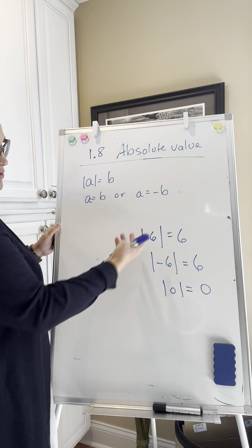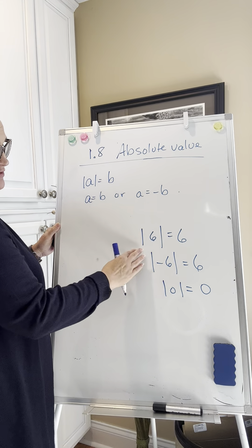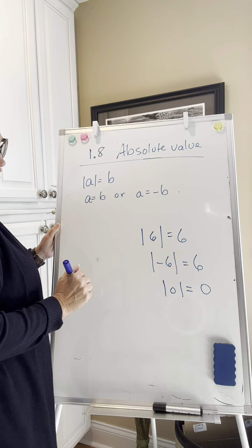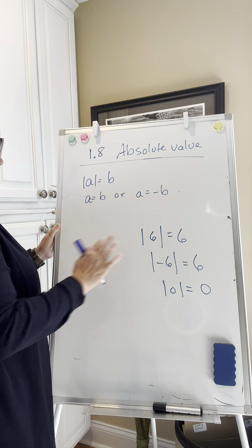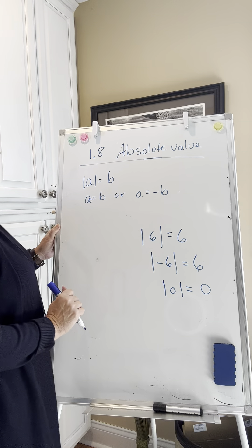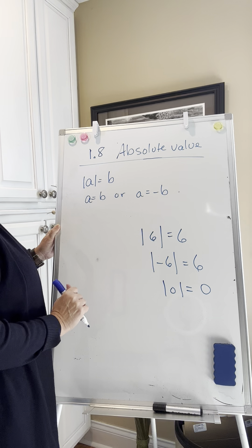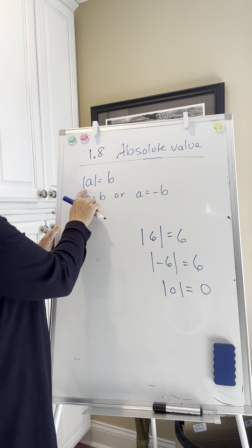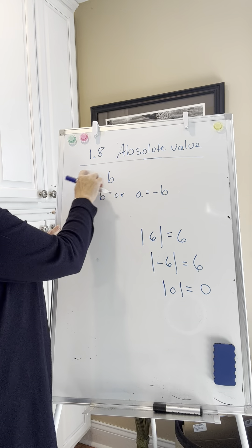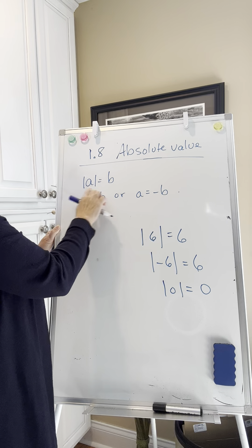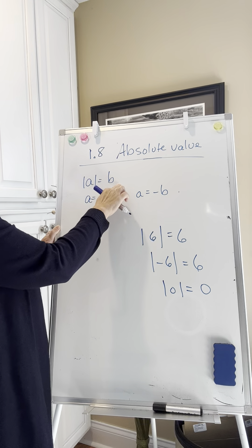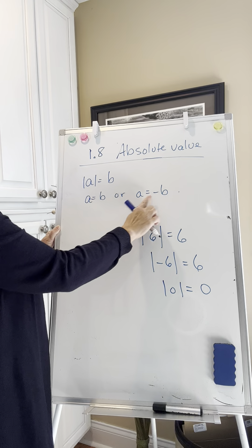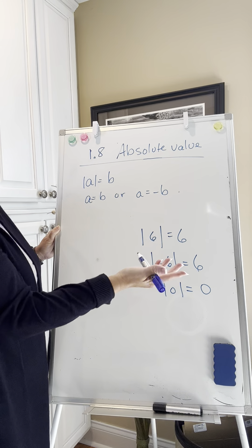In general, we drop the absolute value signs and just write the number in its regular form — the distance from 0. Here's the first rule we see in our handout: the absolute value of any number a equals b. When we have an equation set up like this, either a equals b or a could be negative b.